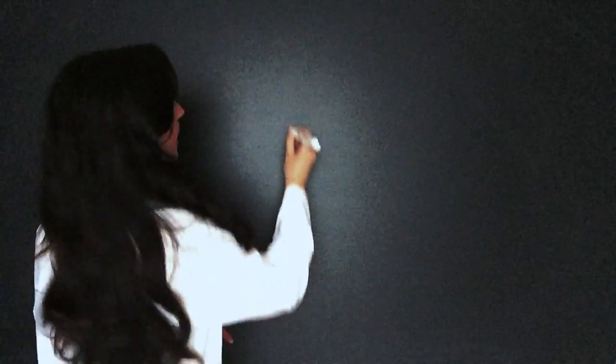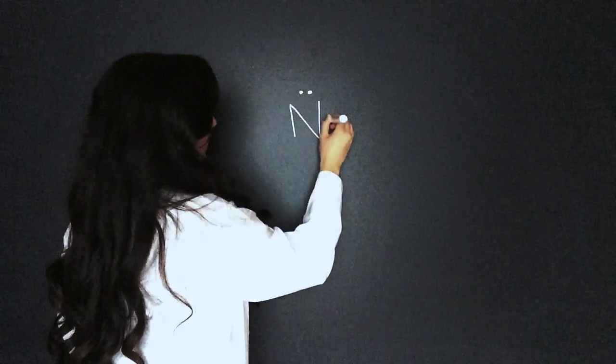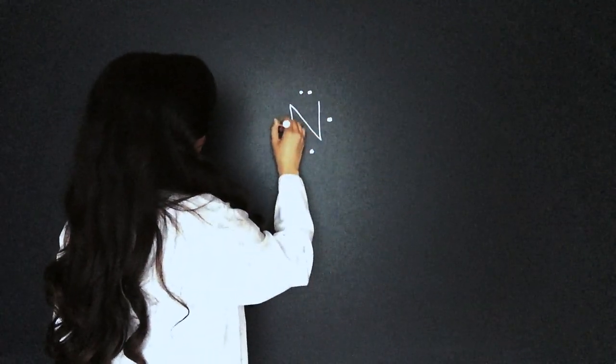My example for a complex cation is ammonium, which is NH4. Let's draw the Lewis structure. Nitrogen has five electrons in its outer shell.